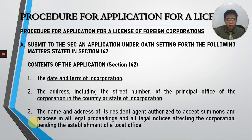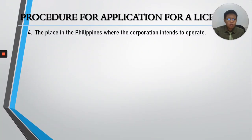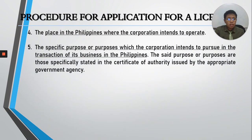Also required is the place in the Philippines where the corporation intends to operate — where they want to establish their office and business establishment. The application must also state the specific purpose or purposes which the corporation intends to pursue in the transaction of its business in the Philippines, as stated in the certificate of authority issued by the appropriate government agency.